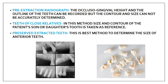The third pre-extraction method is the pre-extraction radiograph. From radiographs, you can measure the size of the teeth and select the same size for your anterior teeth. The occlusal-gingival height and the outline of the teeth can be recorded. However, the contour and the size cannot be accurately determined — this is the drawback of pre-extraction radiographs.